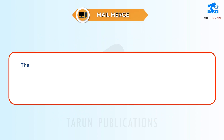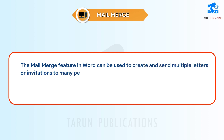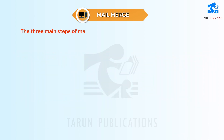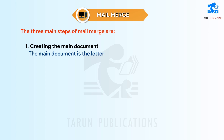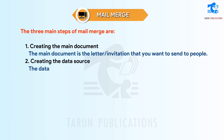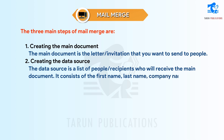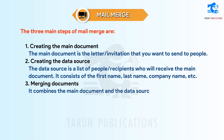Mail Merge. The Mail Merge feature in Word can be used to create and send multiple letters or invitations to many people at the same time. Each letter or invitation is the same but sent to different people. The three main steps of Mail Merge are: 1. Creating the main document — the letter or invitation you want to send. 2. Creating the data source — a list of recipients including first name, last name, company name, etc. 3. Merging documents — combining the main document and the data source.